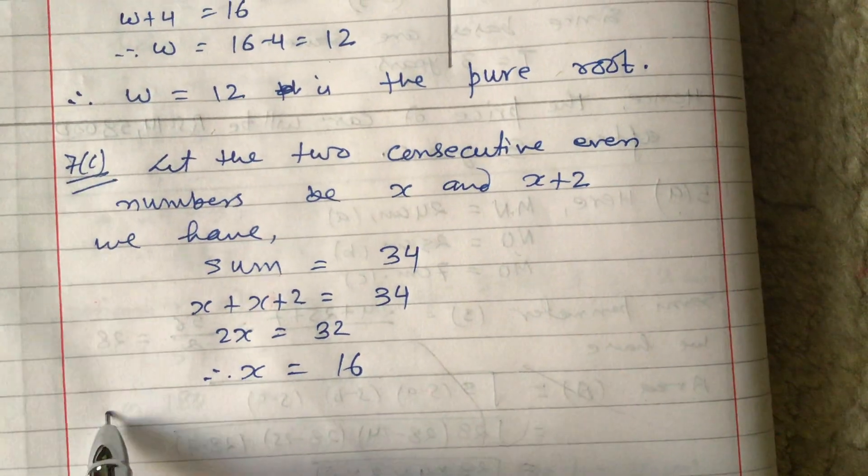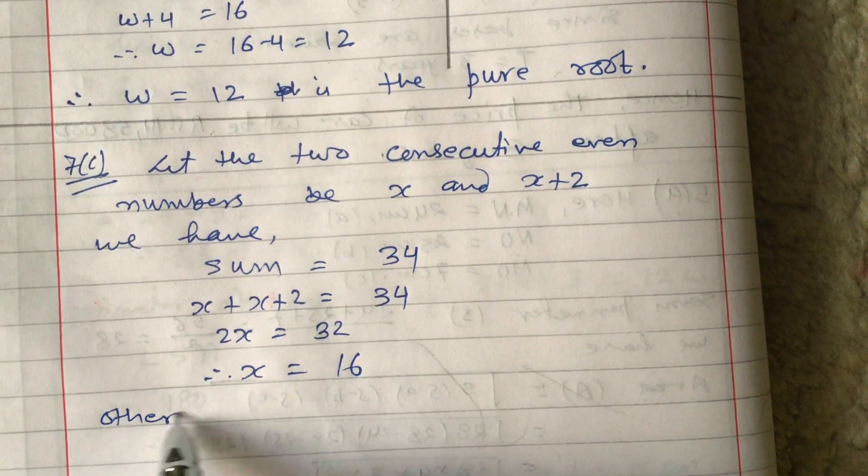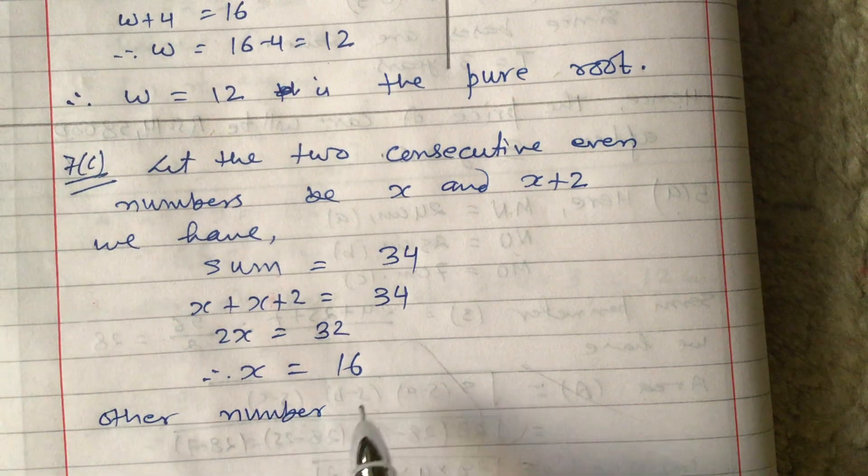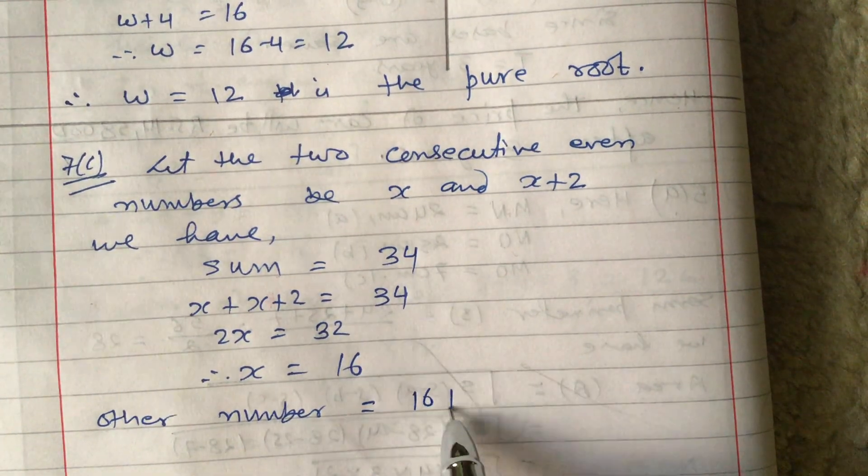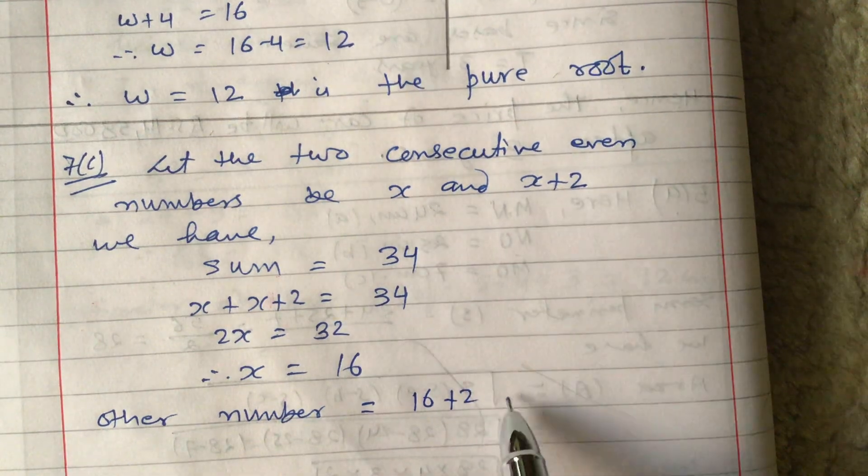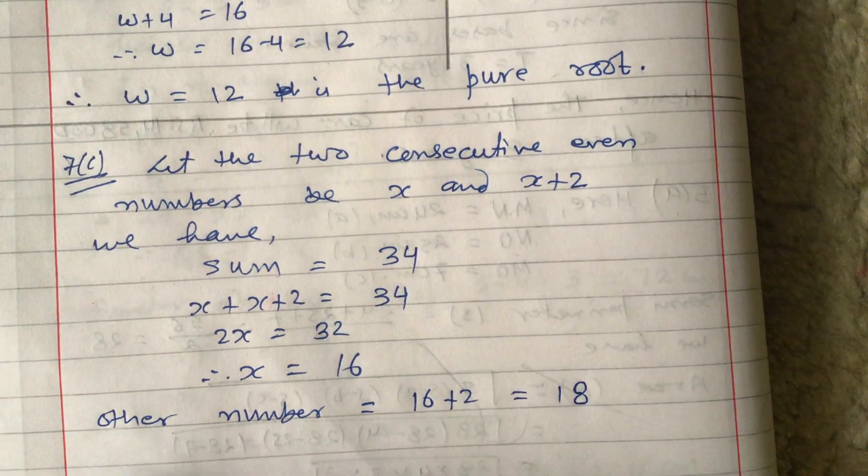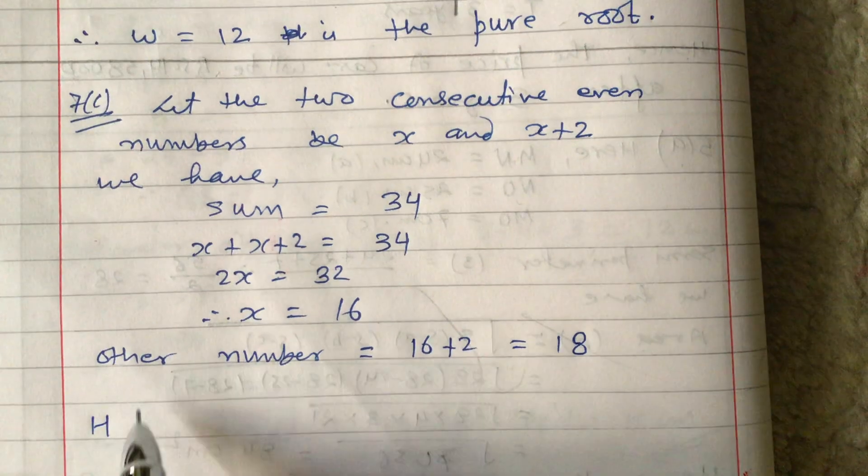Now let us find the other number. The other number is 16 plus 2, which equals 18. So let us write the conclusion now.